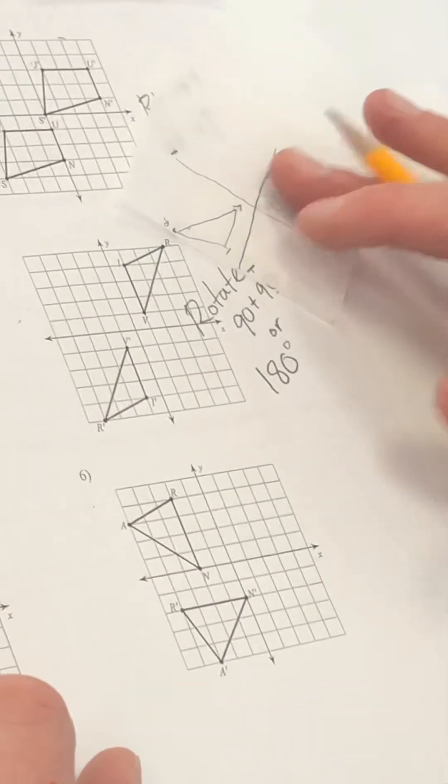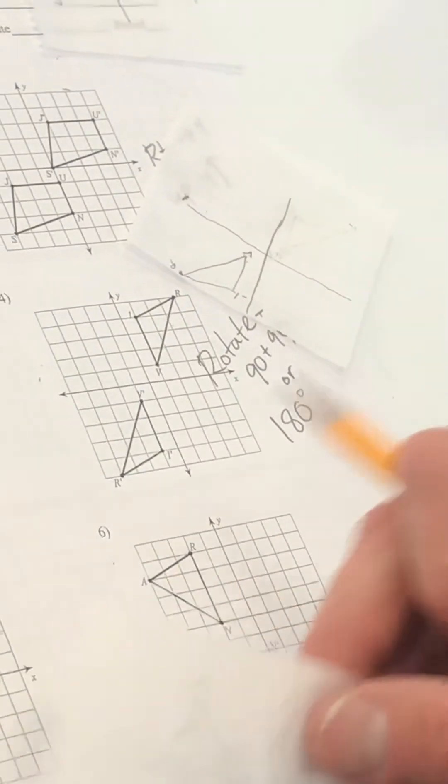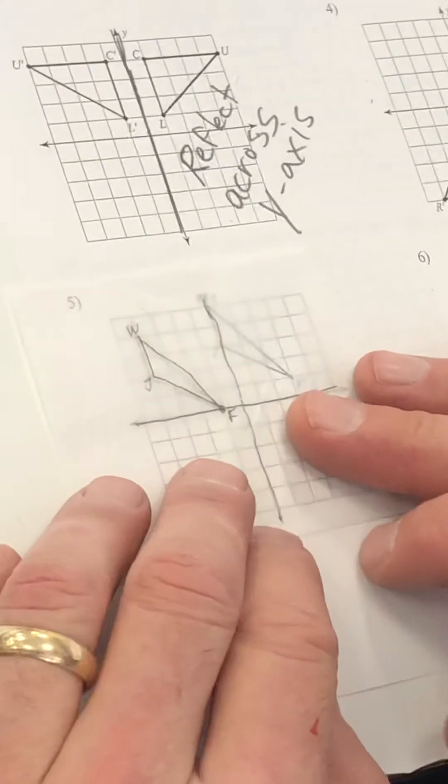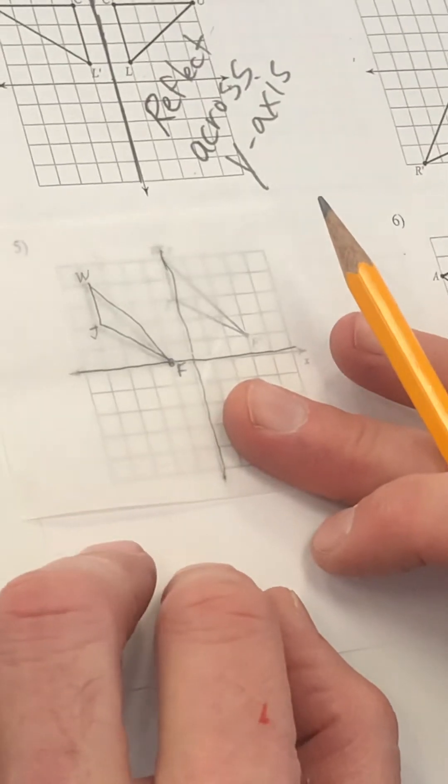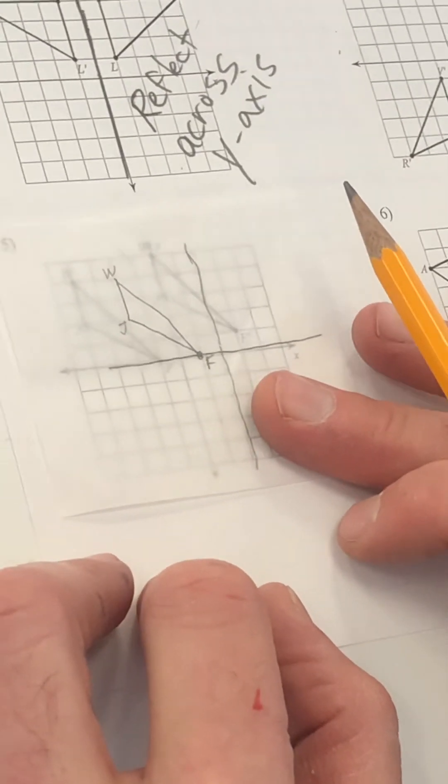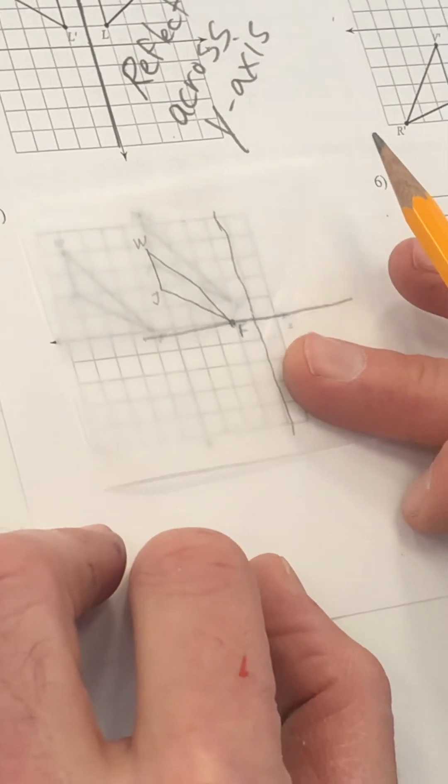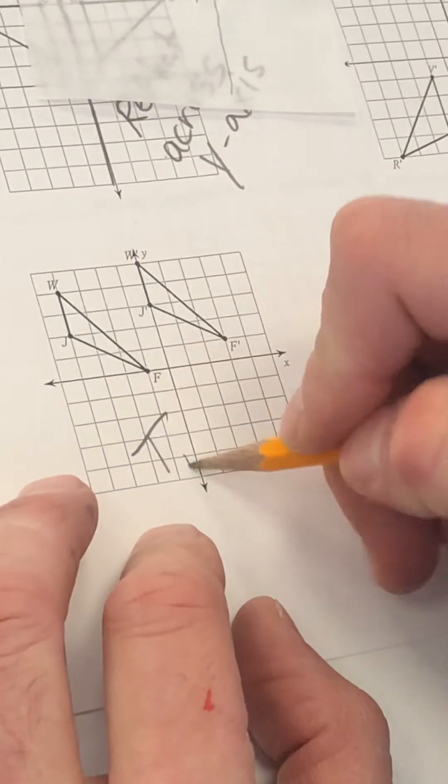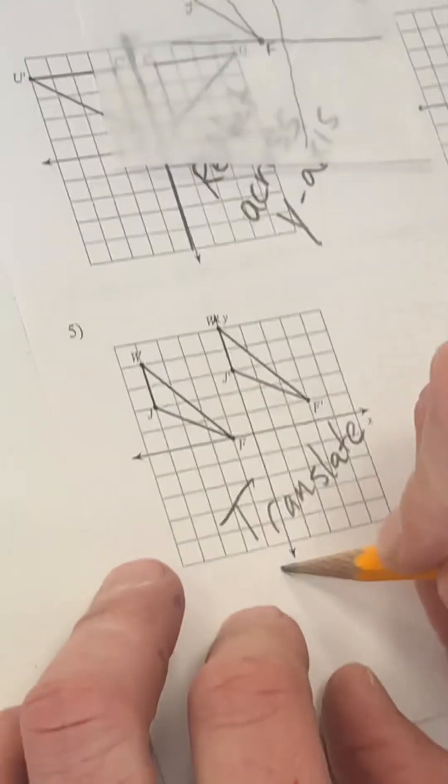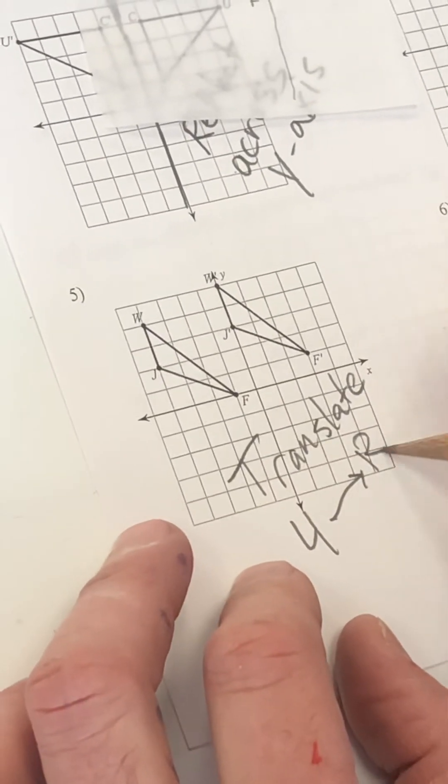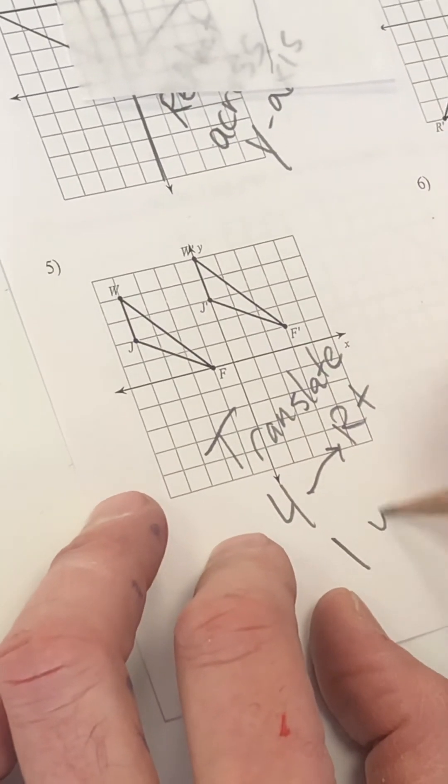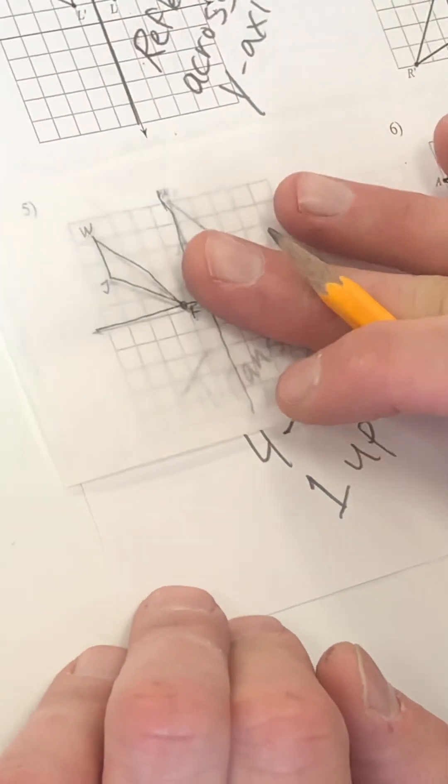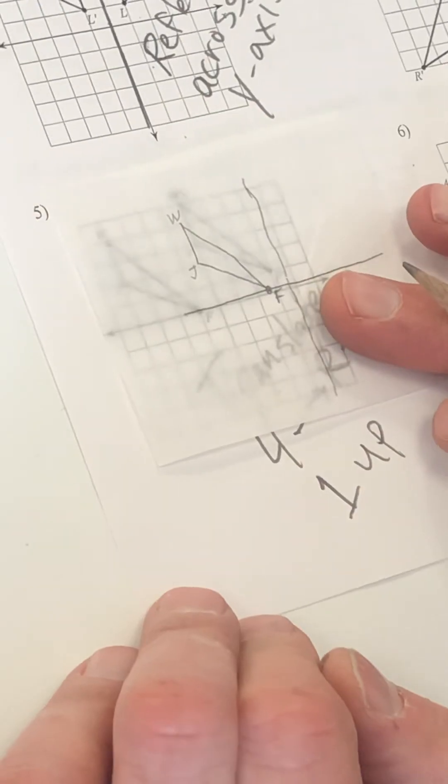So all I did was rotate 90 plus 90 or 180. Again, this patty paper, I'm hoping you're seeing how good it is. And it should help you with all your homework. Number five. Got it done. Looks like I just got to slide over. One, two, three, four. Up one. So I'm going to translate four to the right. One up. Boom. Four to the right. One up.